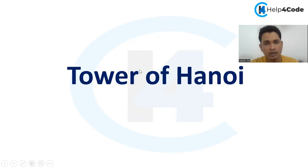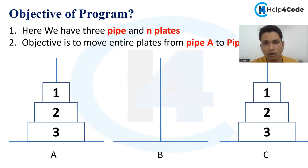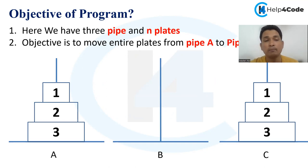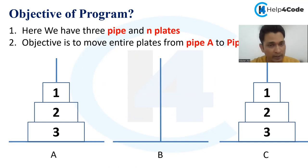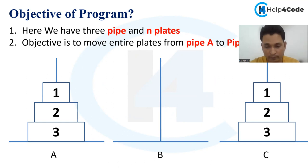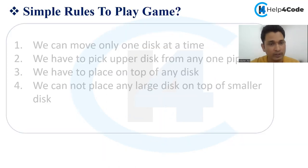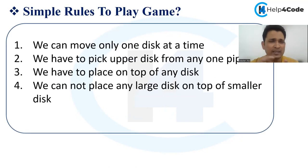The first objective of this problem is to move the entire plates from pipe A to pipe C with the help of pipe B. So the objective is to move the entire plates from pipe A to pipe C.